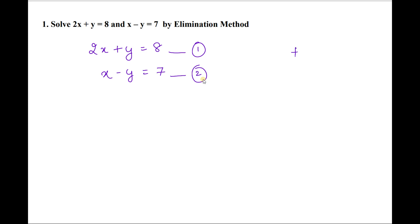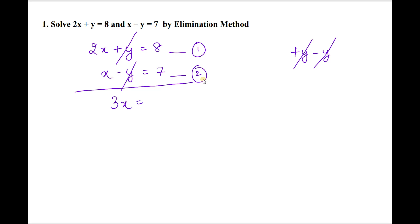Now you need to eliminate one of the variables. Here you can cancel +y and −y. So adding equation 1 and equation 2, you can cancel +y and −y. Now 2x + x = 3x, and 8 + 7 = 15, so 3x = 15. Therefore x = 15/3 = 5. We got x = 5.